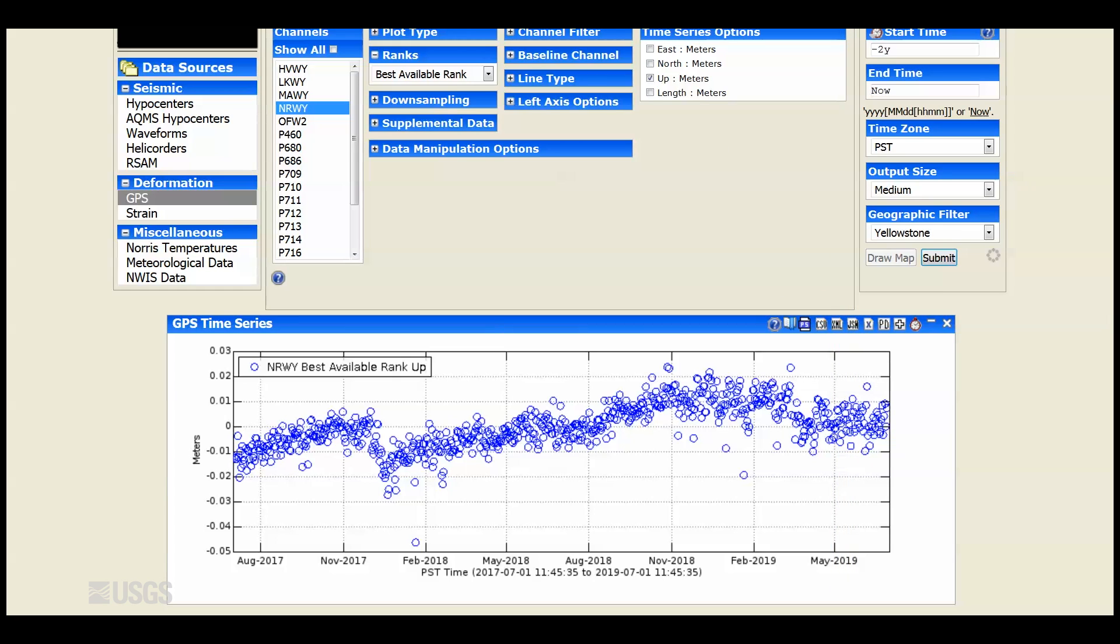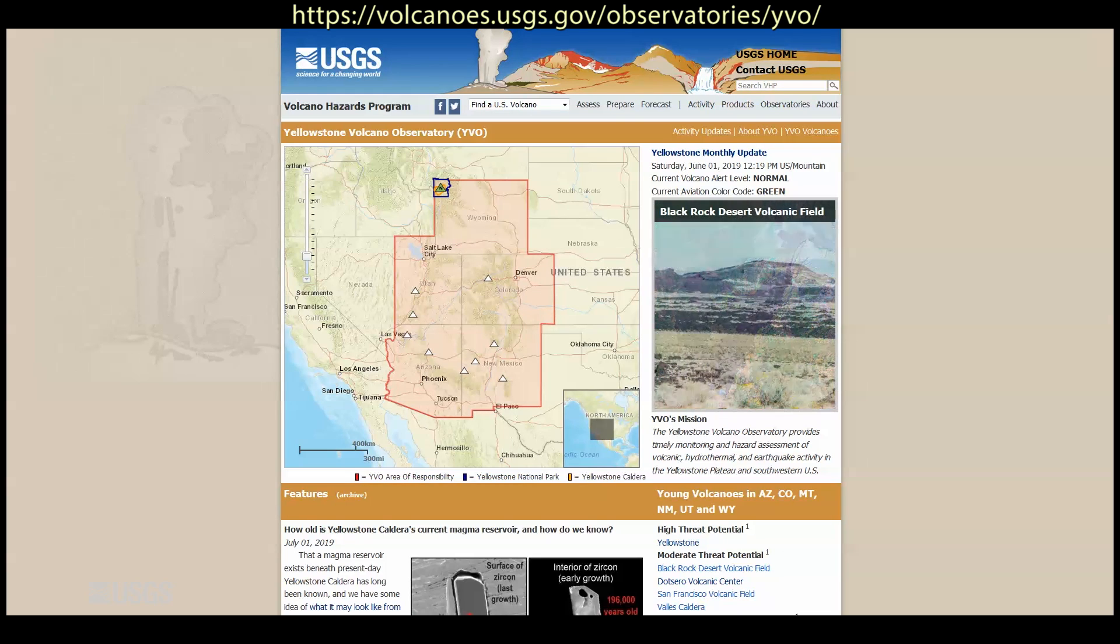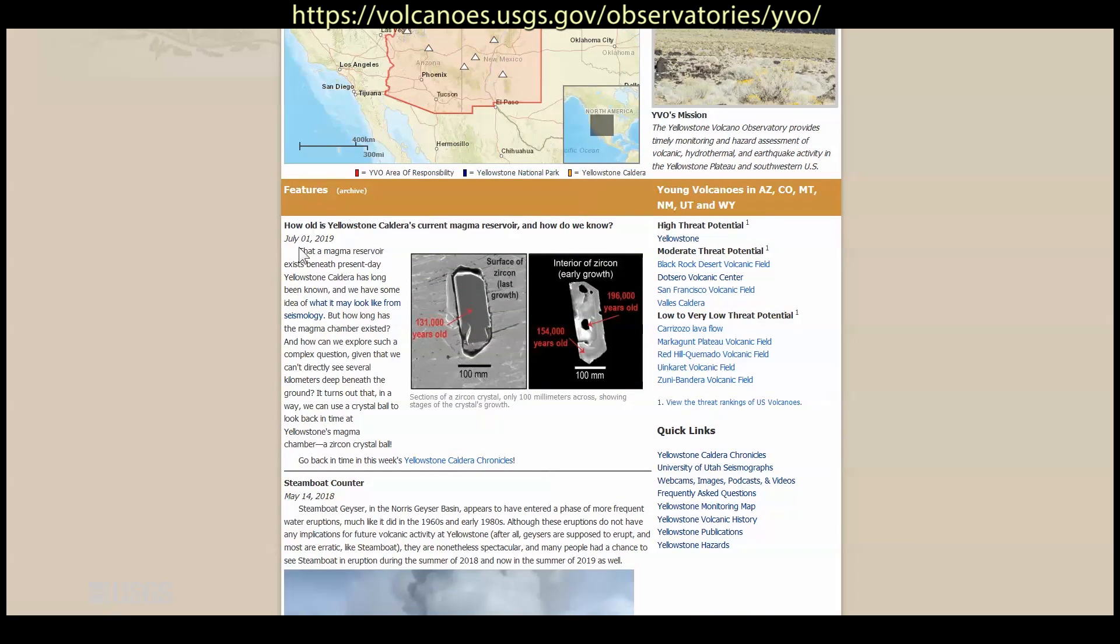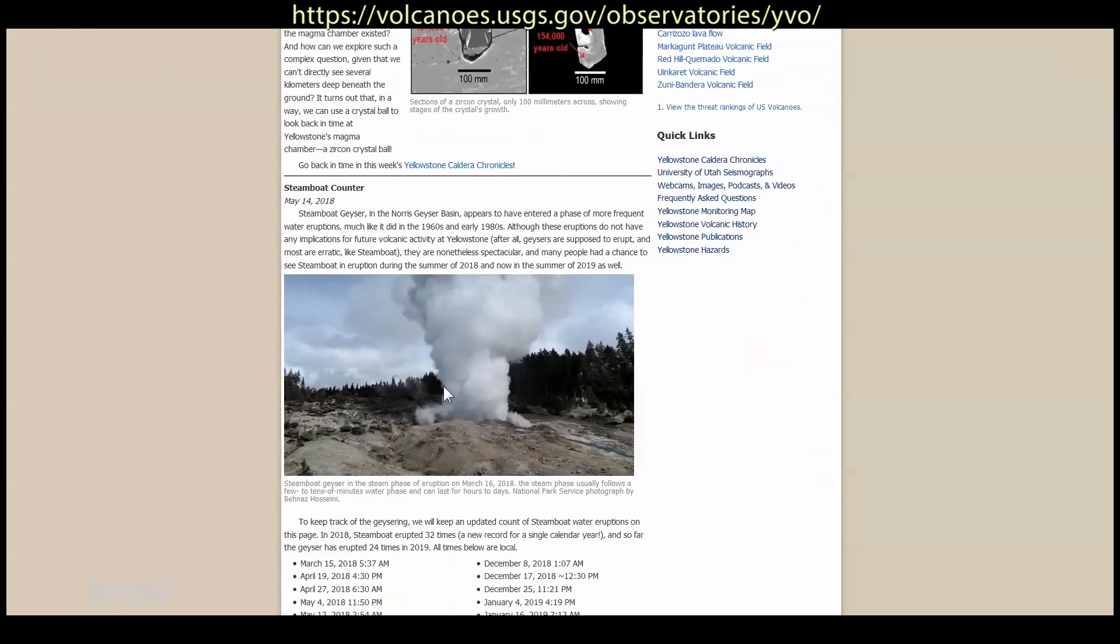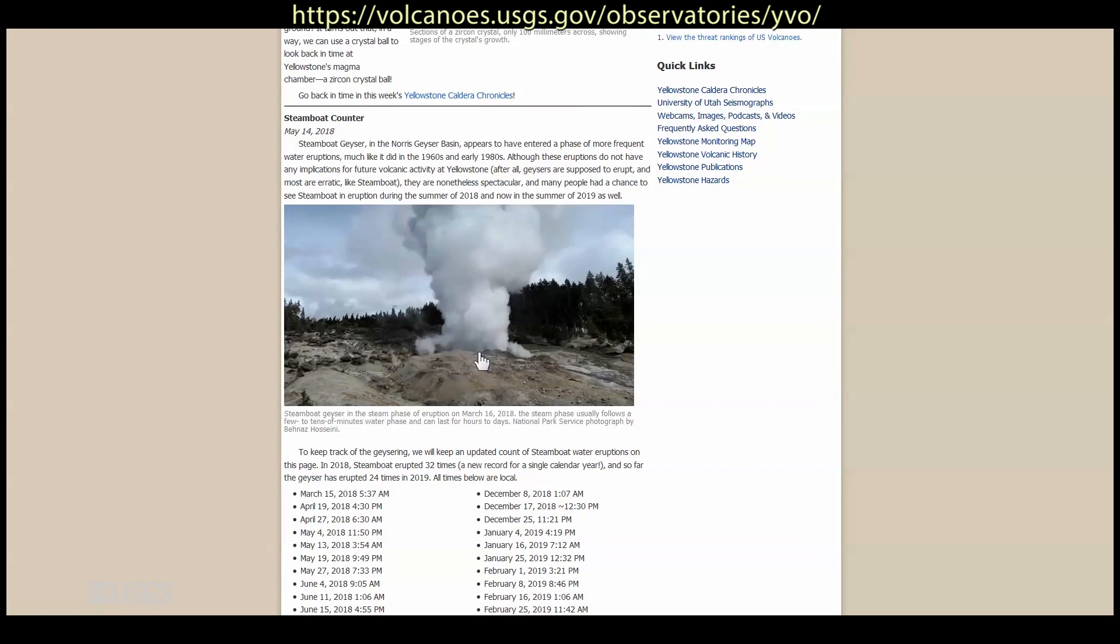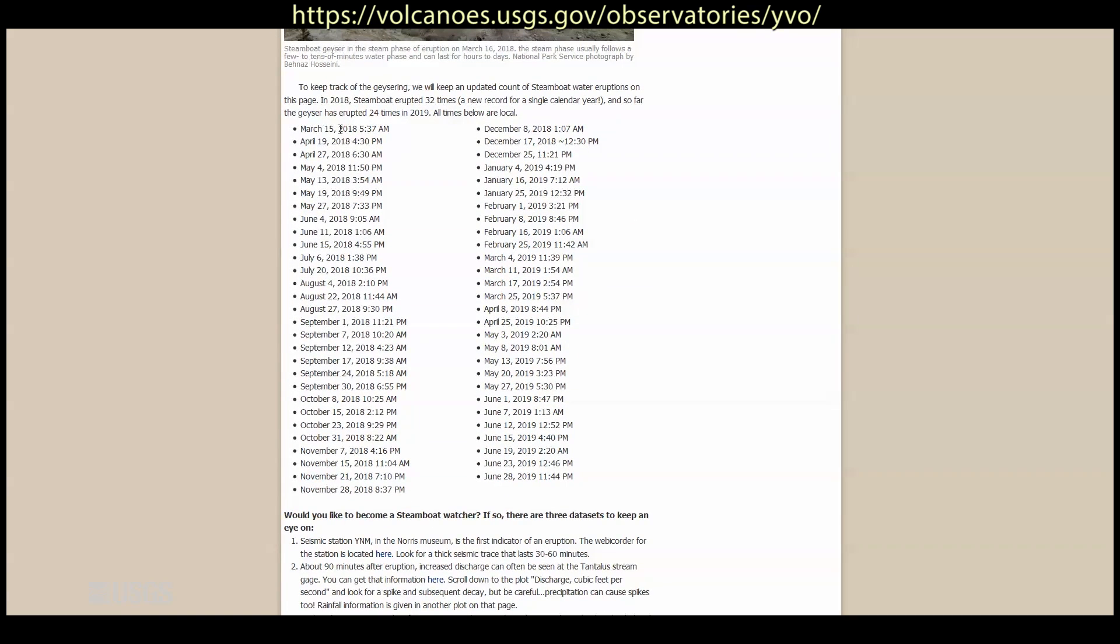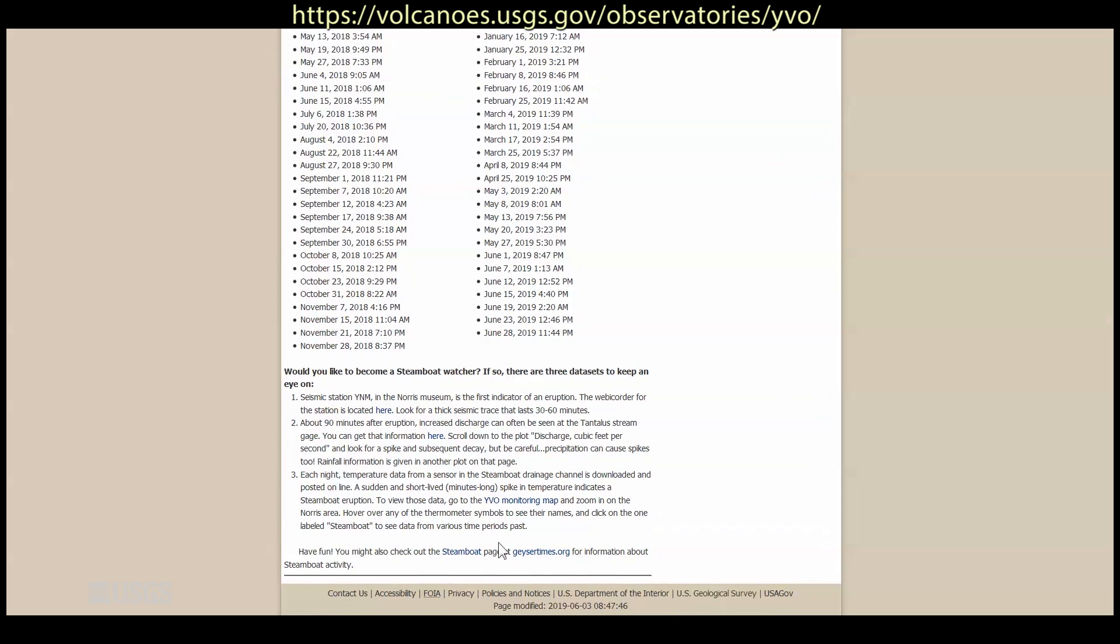I'd like to remind you that if you're interested in more information about Yellowstone, you can always go to the Yellowstone Volcano Observatory website. There you'll find our monthly update and links to Yellowstone Caldera Chronicles, our weekly article posted every Monday. There's also a way to count eruptions of Steamboat Geyser. We have every eruption in the last sequence going back to March 15th, 2018 listed here, and we also show ways you can follow along with Steamboat's activity—looking at the seismic station, discharge measured at the stream gauge, and even temperature data when the temperature stations are in operation.